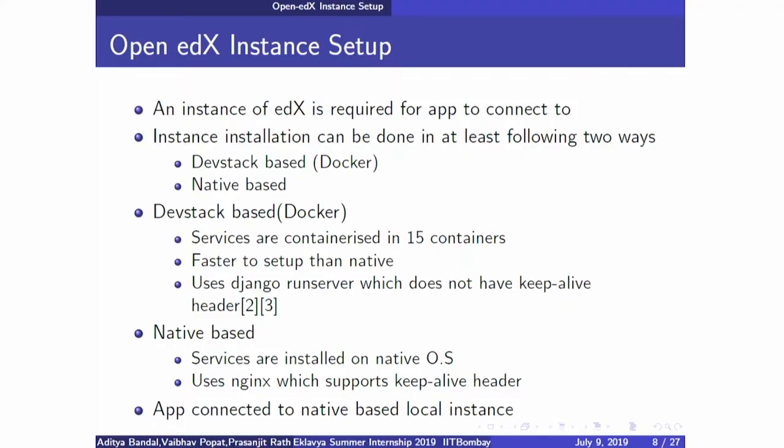First we needed a local instance, which can be done in at least two ways: devstack-based or native-based. Devstack-based services are containerized in 15 containers and are faster to set up, but we didn't use it because it uses Django's run server, which does not have a keep-alive header — causing an error while running the app. So we went for native-based, where services are installed on the native OS using Nginx, which supports the keep-alive header.